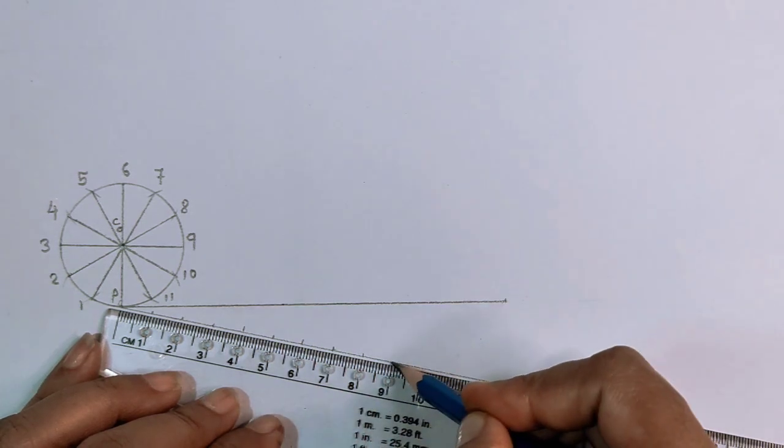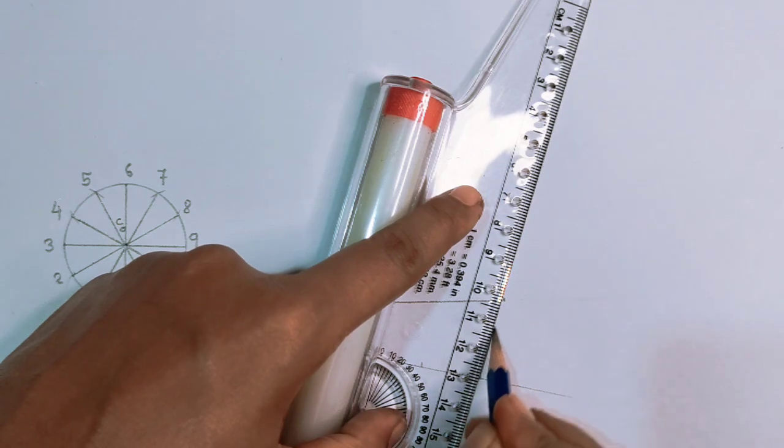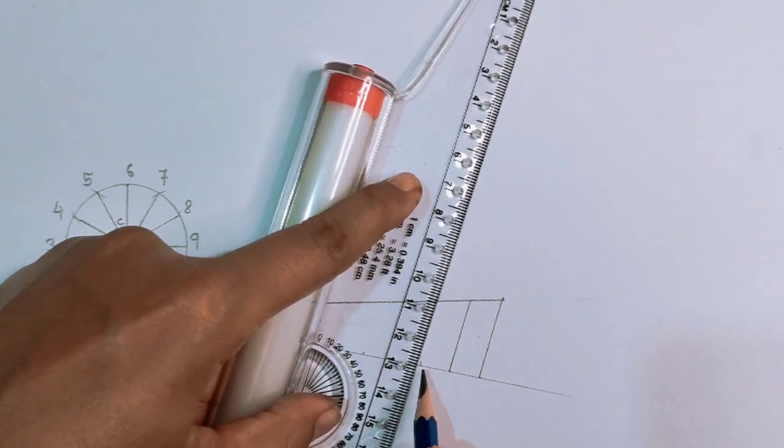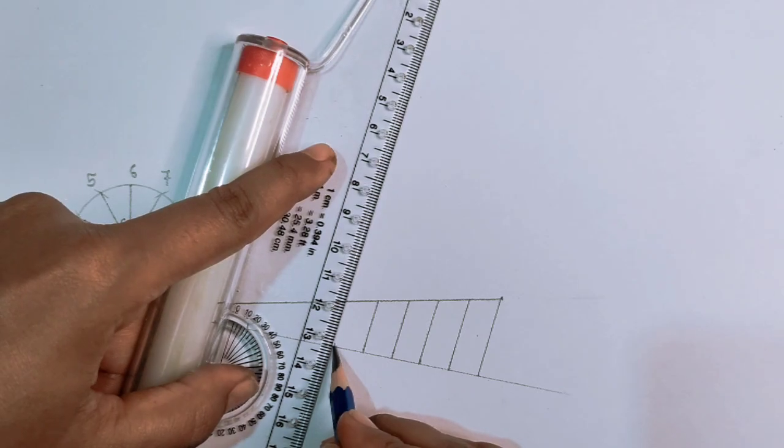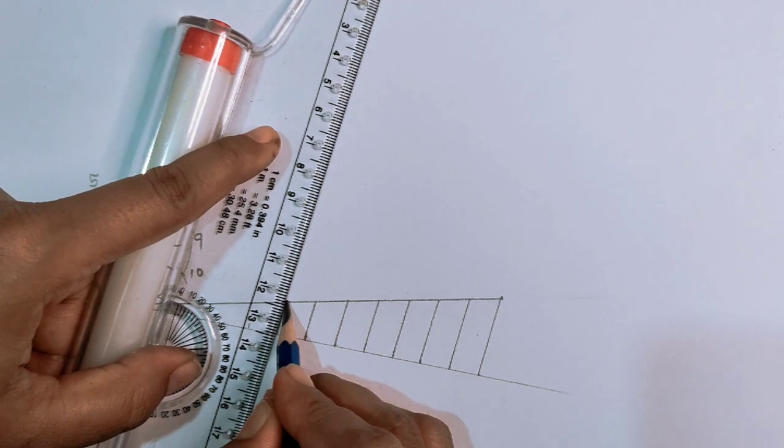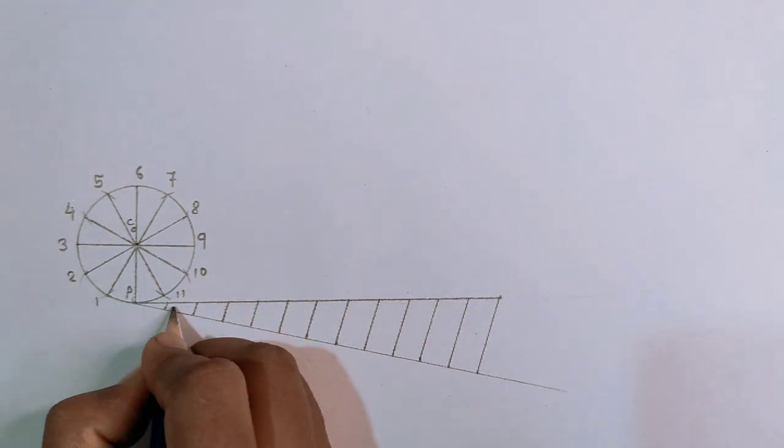Next step: divide that straight line into 12 equal parts. Check my previous video where I show how to divide a straight line into equal parts using basic geometric method. Name the parts as 1 dash, 2 dash, 3 dash, up to 12 dash.